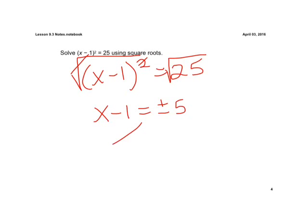Now this really turns into two problems because we have to have one with our positive 5 and one with our negative 5. So if we go to solve that, x minus 1 is 5 and x minus 1 is negative 5. This is how we're going to get our two solutions. So now we're just solving for x.